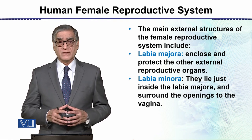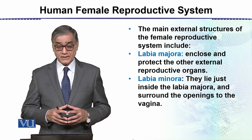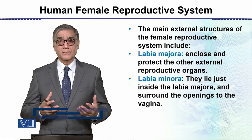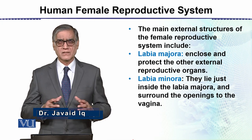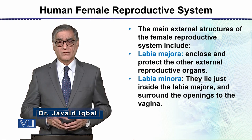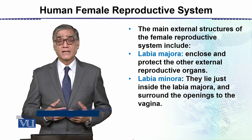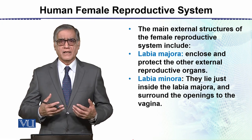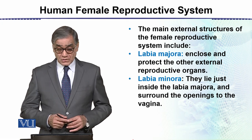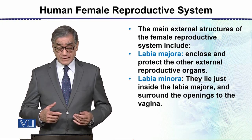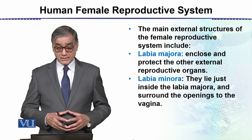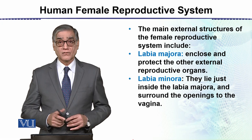The main external structures of the Female Reproductive System include the Labia Majora and the Labia Minora. These are lip-like structures which cover the opening of the vagina, which is the canal that develops into the birth canal in a mature woman. The Labia Minora lie just below the Labia Majora and surround the opening of the vagina.